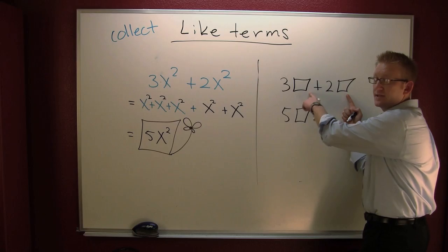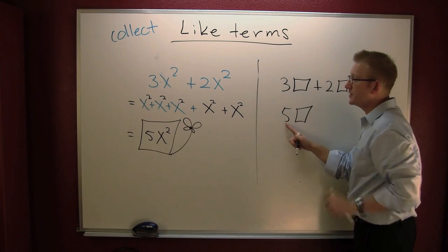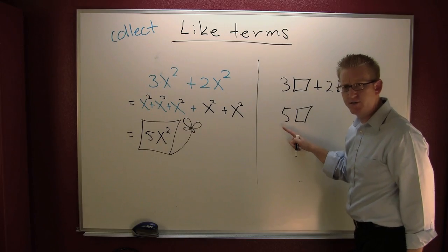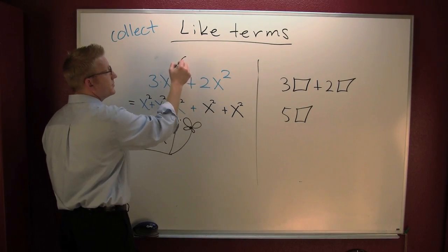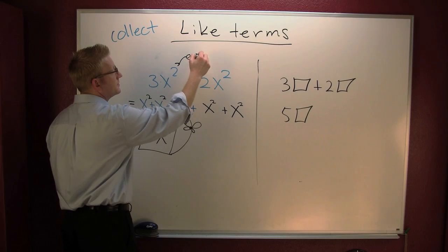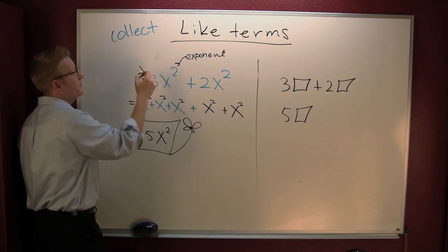So if you have like terms, how do you collect them? By adding their coefficients. Here's the parts of these things. This is your base. This is your exponent. And this is your coefficients.